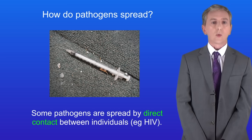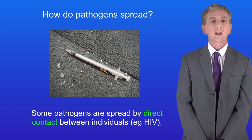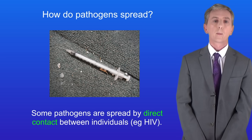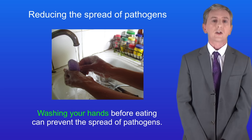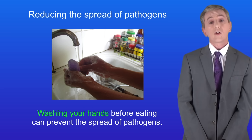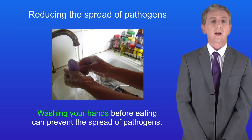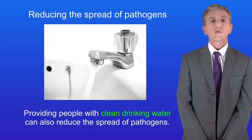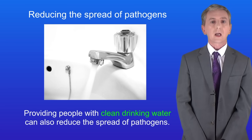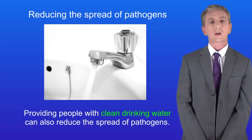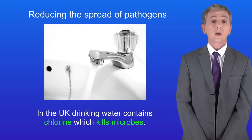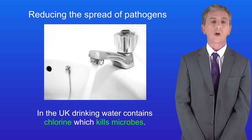There are several ways that we can reduce the spread of pathogens. Firstly, practicing basic hygiene can prevent the spread, for example washing your hands before eating. Providing people with clean drinking water can also reduce the spread of pathogens — in the UK, drinking water contains chlorine which kills microbes.